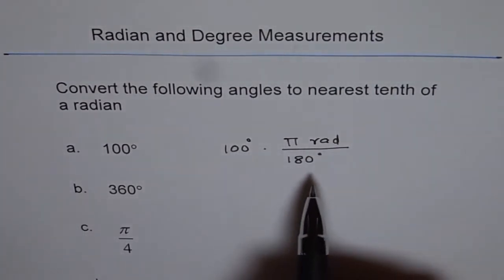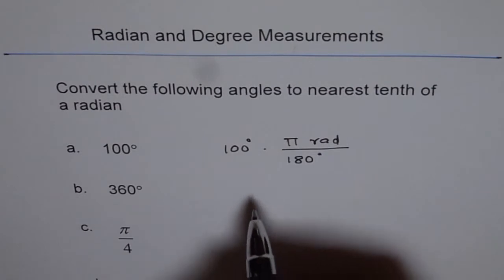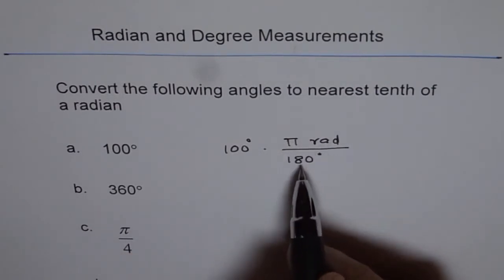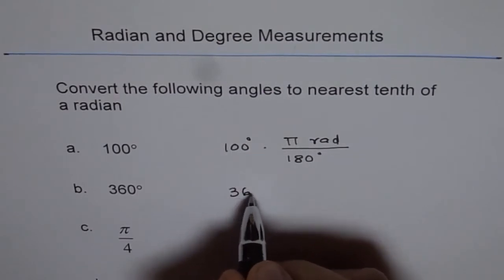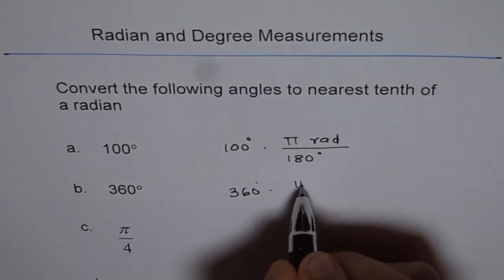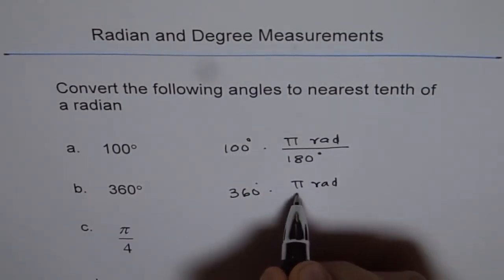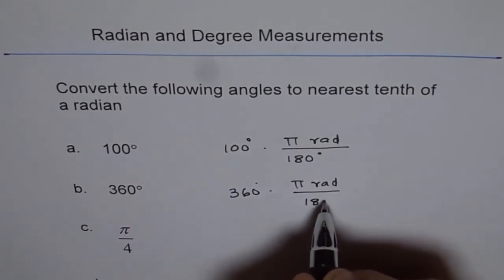So multiply by that factor and everywhere you just need to multiply by pi radians over 180 degrees. So here also, 360 degrees times pi radians over 180 degrees, correct?